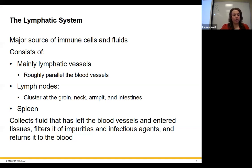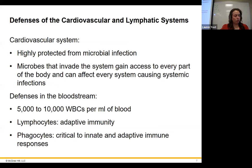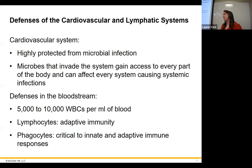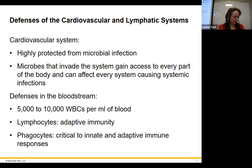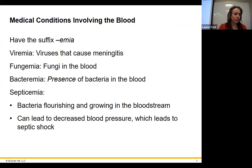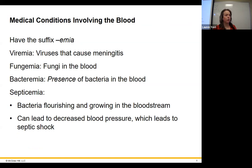The spleen is part of the lymphatic system as well. The defenses of the cardiovascular and lymphatic systems are pretty robust — all your white blood cells circulate through your bloodstream, including B and T cells, antibodies, and phagocytes as part of your innate immune response. It's actually maybe the most defended of all the systems we'll talk about.